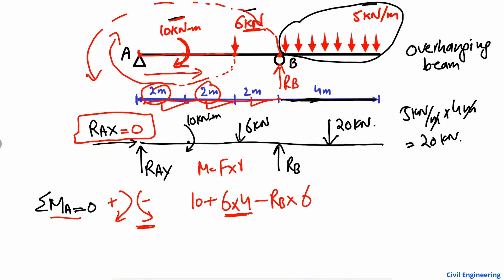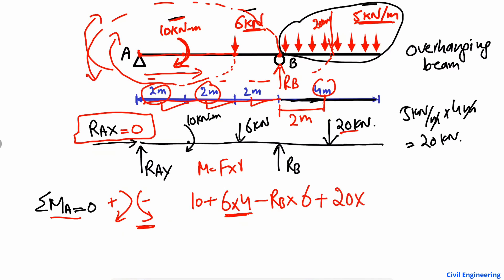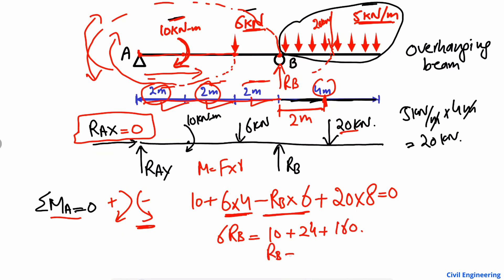The equivalent UDL load of 20 kilonewton acts at the center of the 4-meter overhanging portion, which is 2 meters from the end. It acts downward and creates a clockwise moment about point A, so it is positive. The moment arm from the midpoint to A is 2 plus 2 plus 2 plus 2, which equals 8 meters. Setting the summation of moments at A equal to zero and rearranging, we get 6 RB equals 10 plus 24 plus 160.